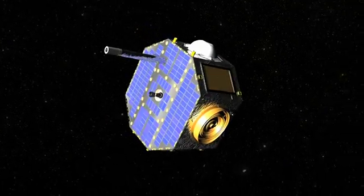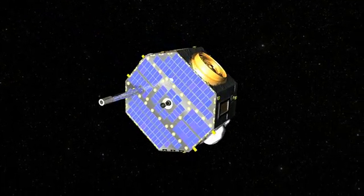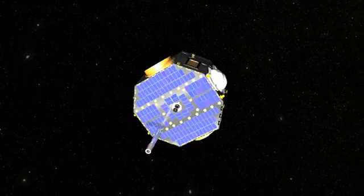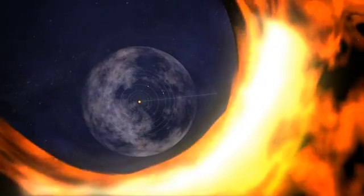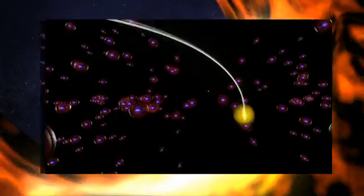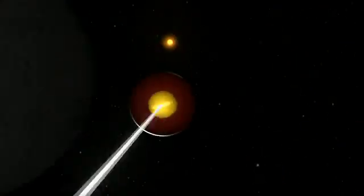IBEX is also different because it makes its images from particles instead of light. Some of the atoms it detects originally came from the Sun as charged particles, traveled out to the heliosheath, bounced back, and gained electrons to make them neutral.